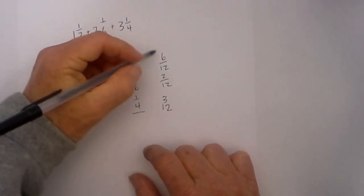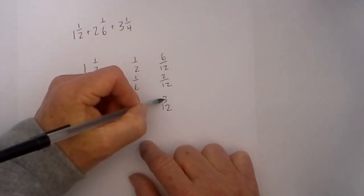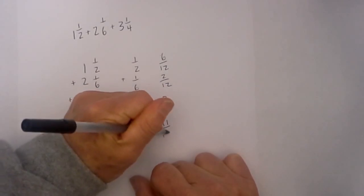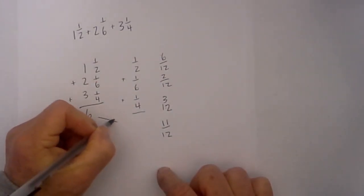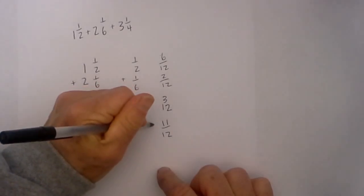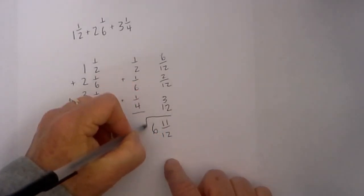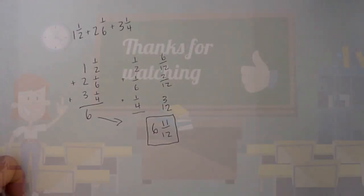I then add these up: six plus two plus three is eleven twelfths. So now I combine these two, so the final answer will be six and eleven twelfths. I can't simplify this anymore, so that is your answer: six and eleven twelfths. Thanks for watching, we upload a new math video every day.